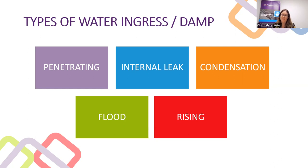Then we move to internal leaks. These are from failed plumbing fittings due to corrosion, cracking, general wear and tear, incorrect installation, and also sealant failure around places like showers. These are typically slow leaks causing rot to internal framing timbers, and as they are slow leaks we do not often see visual signs of water ingress in the living spaces, meaning they can go undetected for quite some time.